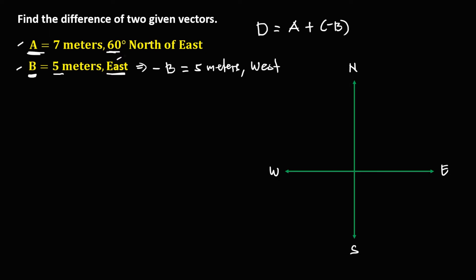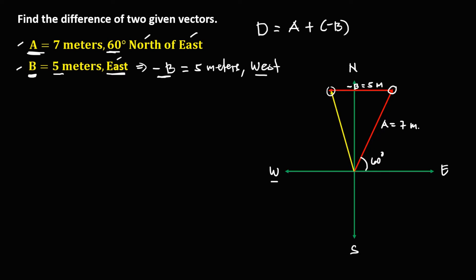Vector A is 60 degrees north of east, and vector A is equal to 7 meters. Then for vector negative B, going to the west — from the endpoint of vector A — so this is vector negative B, and that's 5 meters to the west.